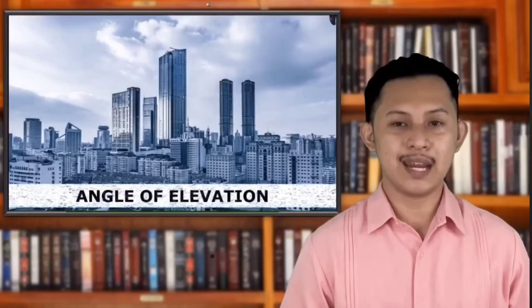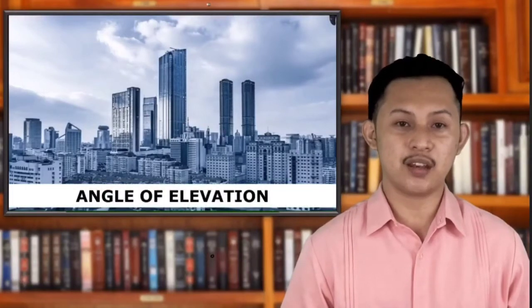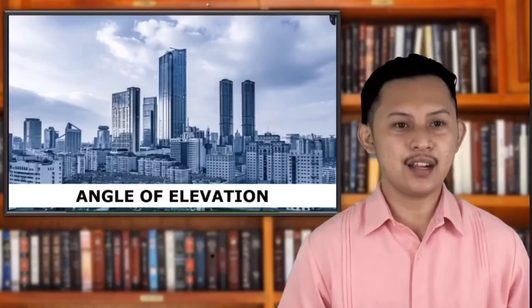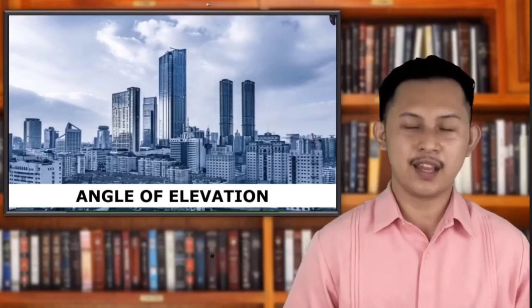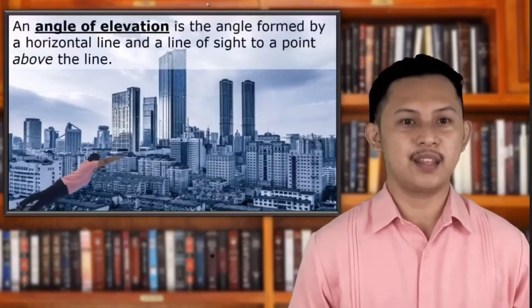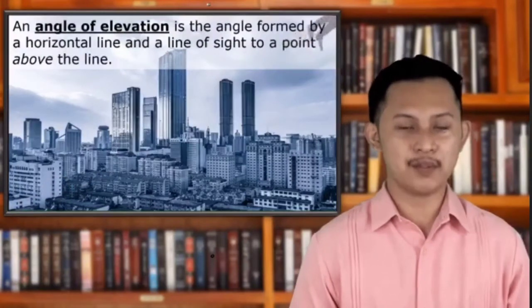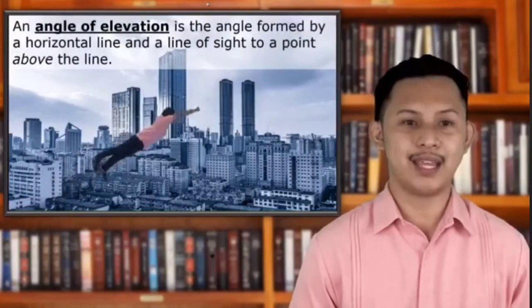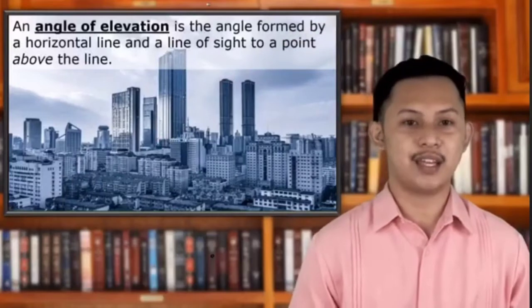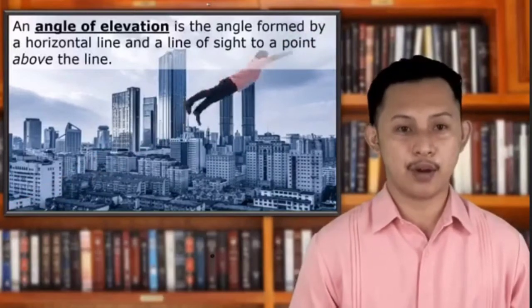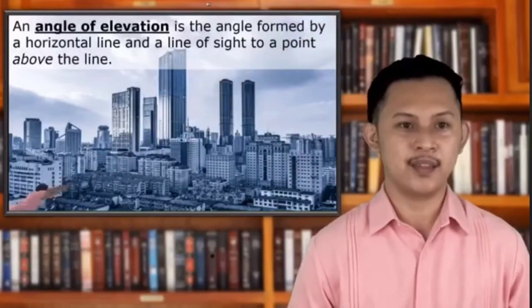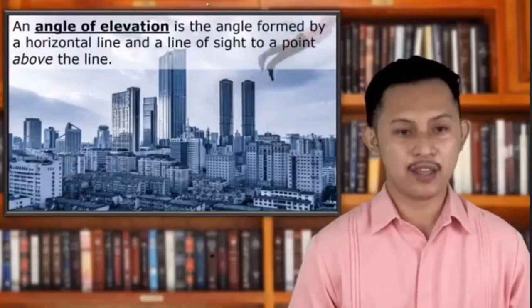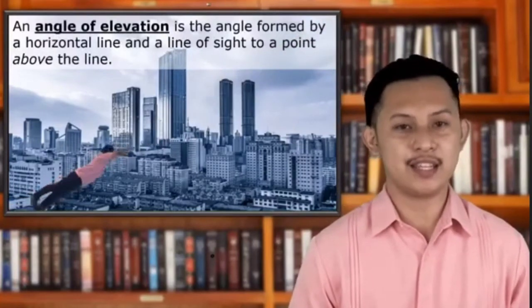This example shows an angle of elevation. What is an angle of elevation? An angle of elevation, as you can see in this picture, is an angle formed by a horizontal line and a line of sight to a point above the line. That is an angle of elevation. Try to check the given illustration.